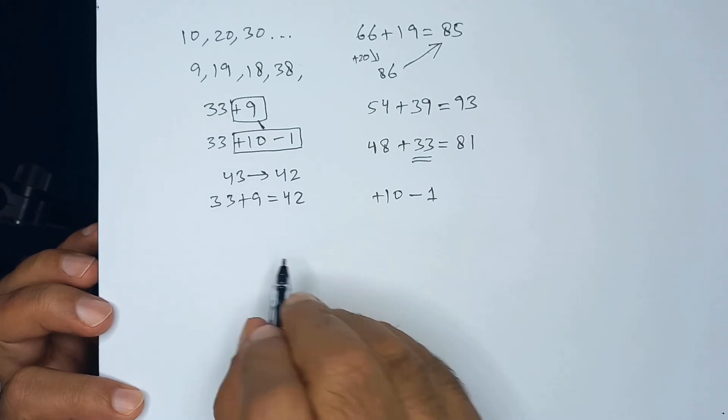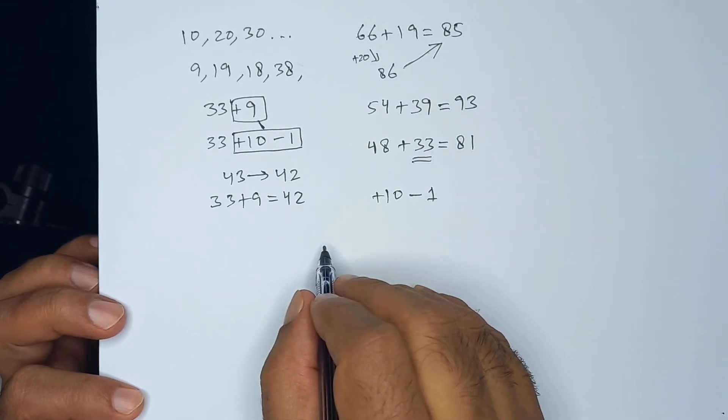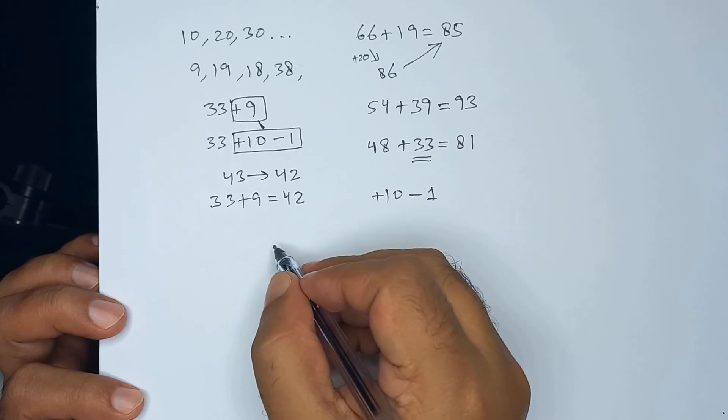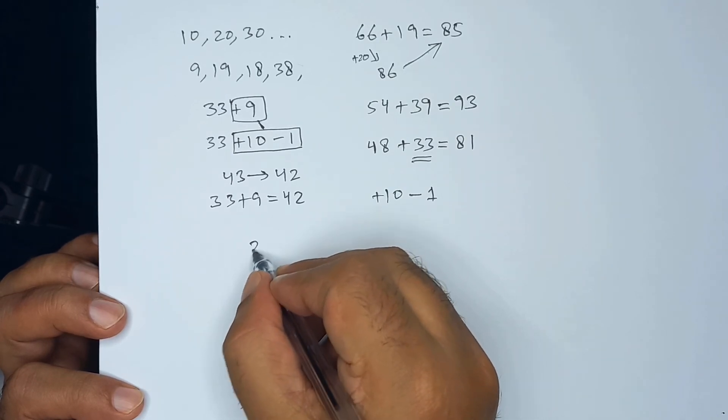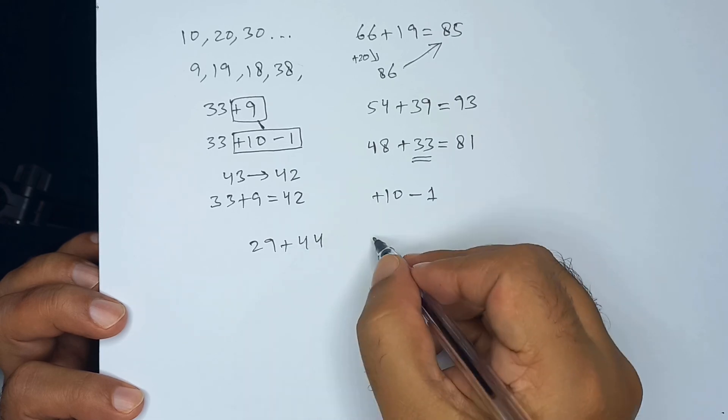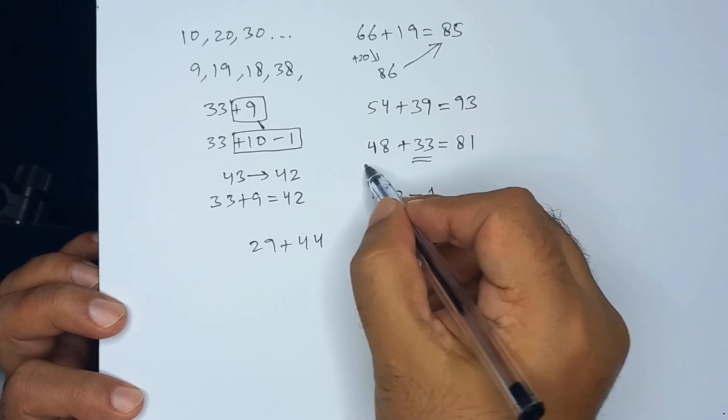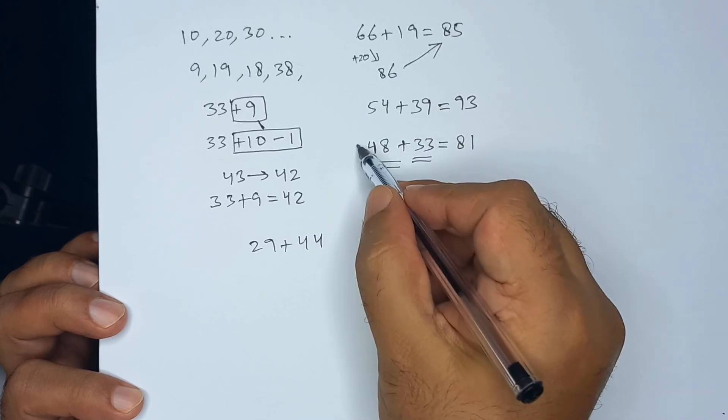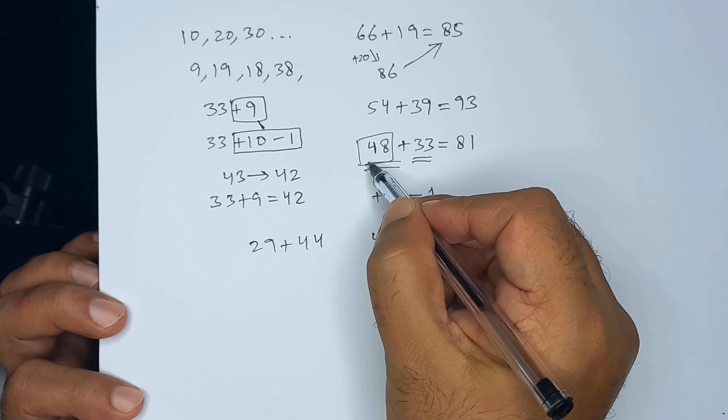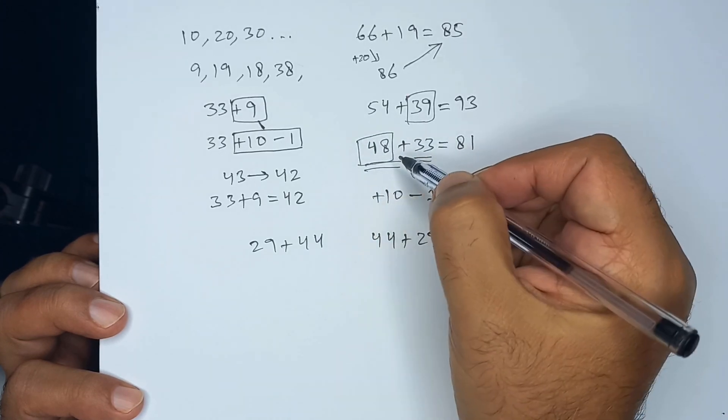Either of the numbers can be near a base. So, we can use this method for 29 plus 44 or 44 plus 29, doesn't matter. As I did here, the number near the multiple of 10 was before and here it was after. It doesn't matter. The order does not matter here.